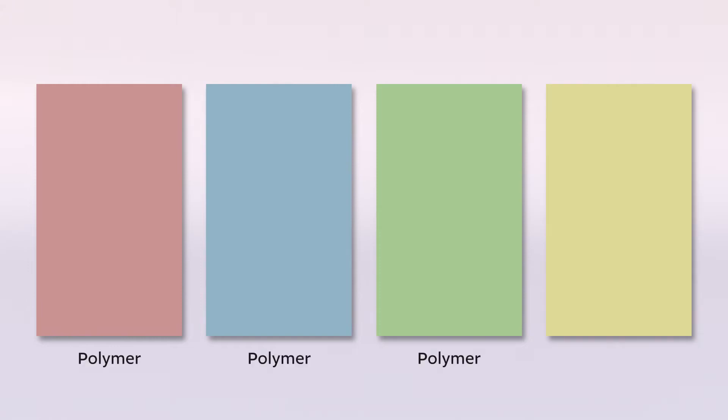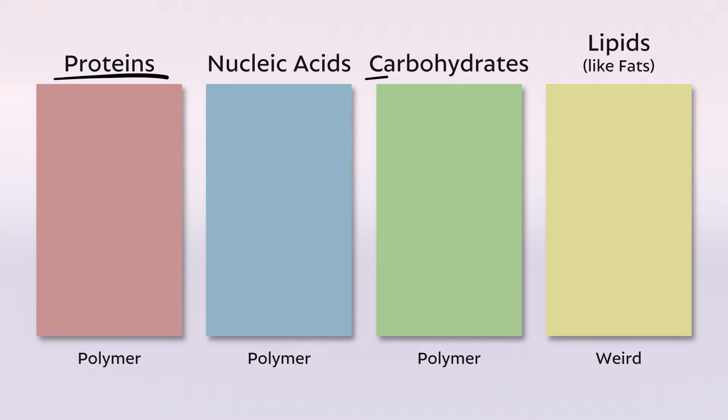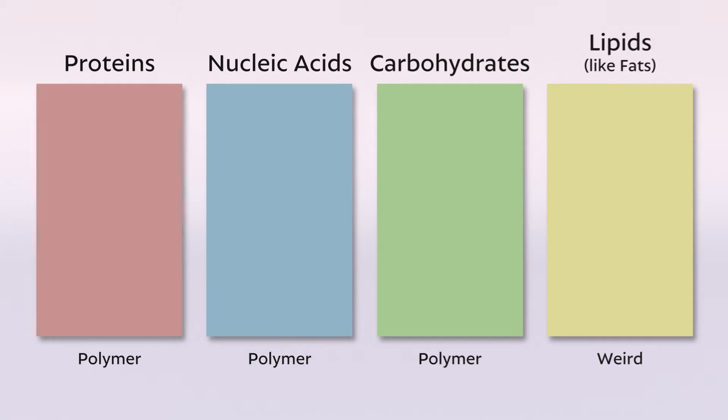In biology, we talk about four different classes of macromolecules. Three of which are in the form of polymers. One is a bit unusual. They are proteins, nucleic acids, carbohydrates, and lipids like fats. These three are a big part of nutrition, what people call macronutrients. We need to examine each of these categories. We'll start with proteins.